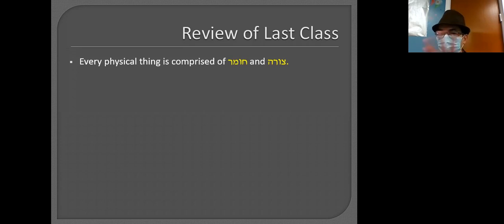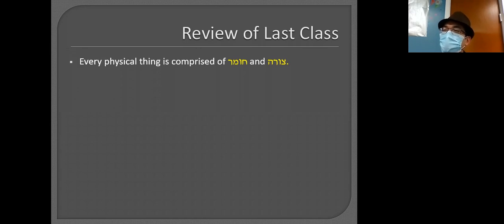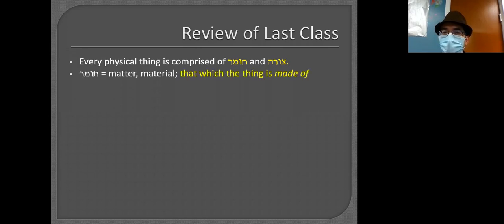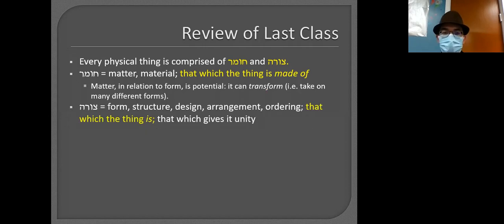Different words than last time, but 'homer' is the Hebrew word for material or matter, and 'surah' is the word for form. What's the difference between matter and form? Matter is like the material — the thing itself. Form is like what it's made into. Matter is what it's made out of; form is what it's made into.